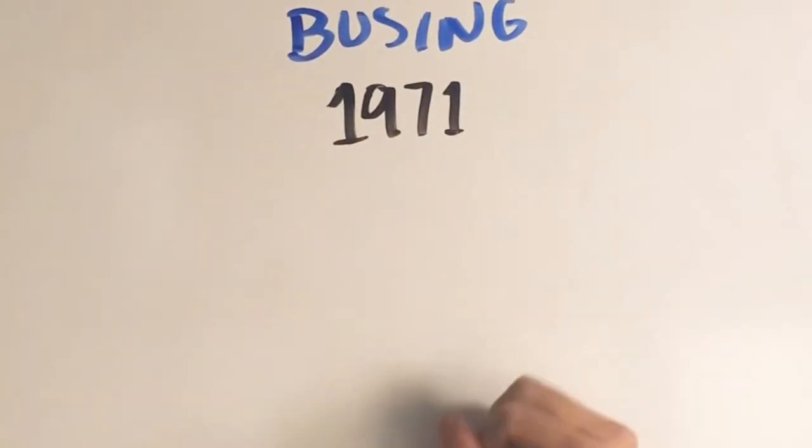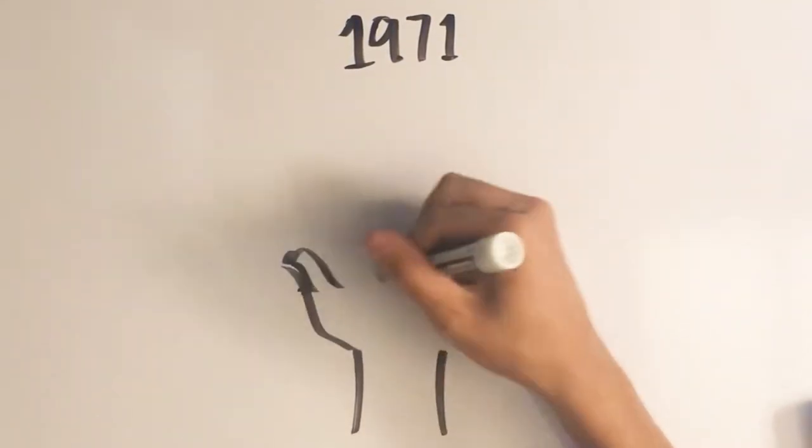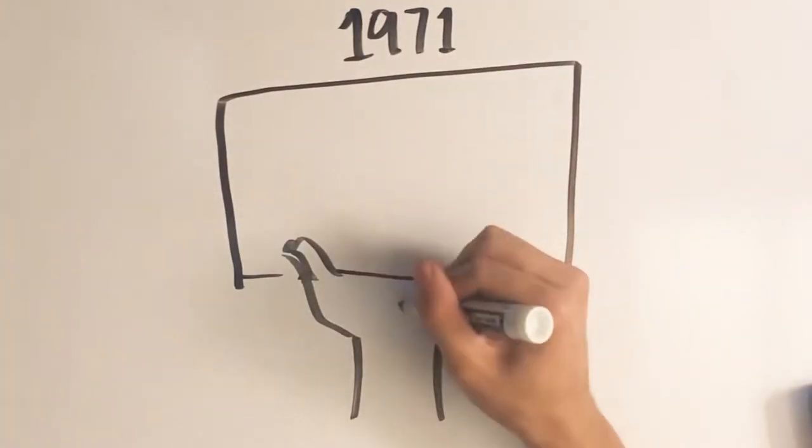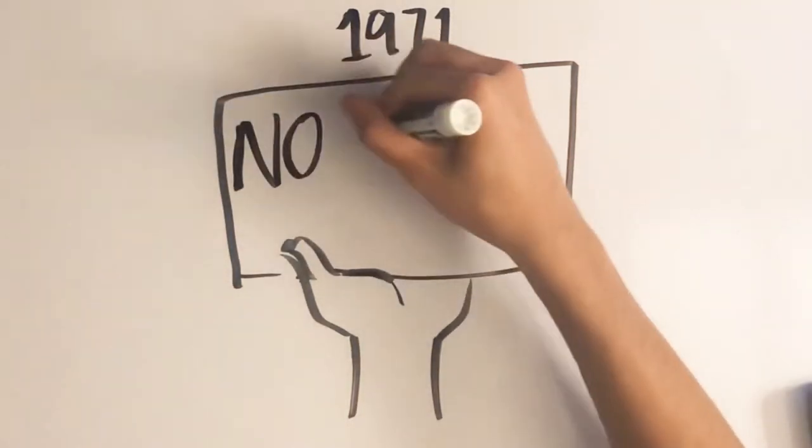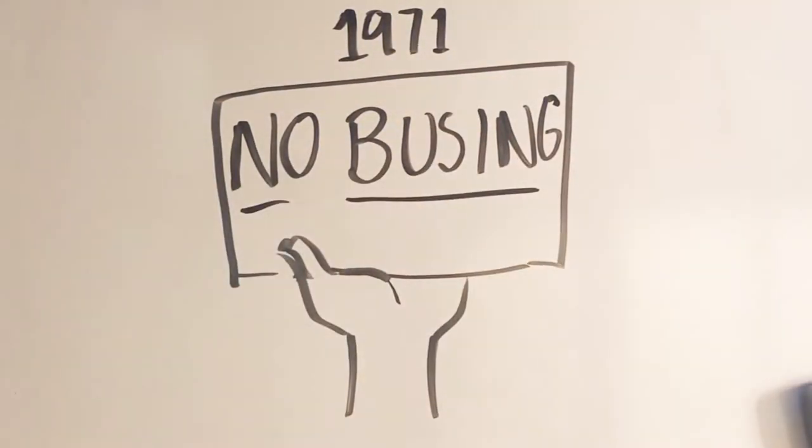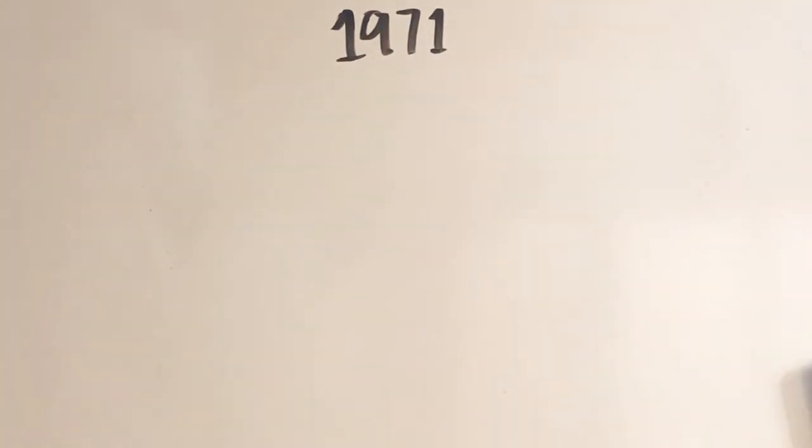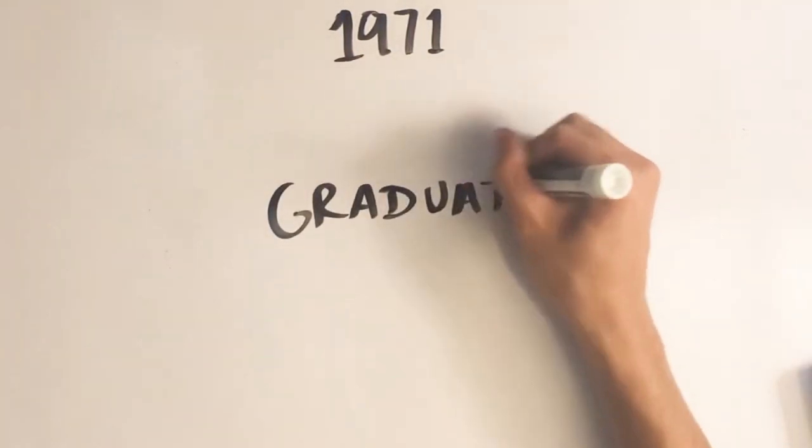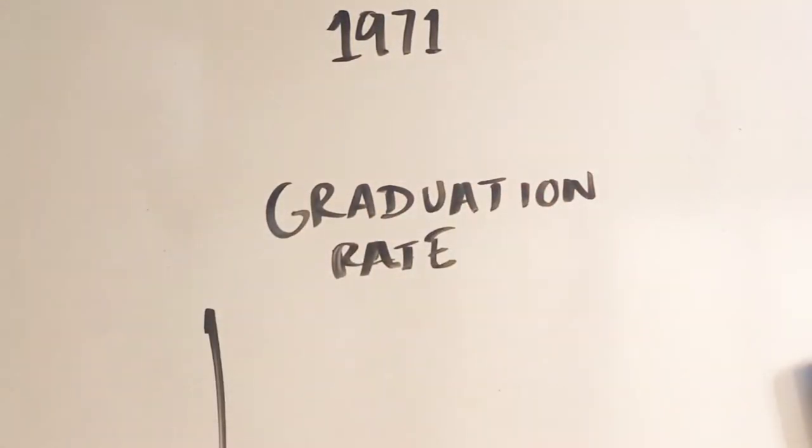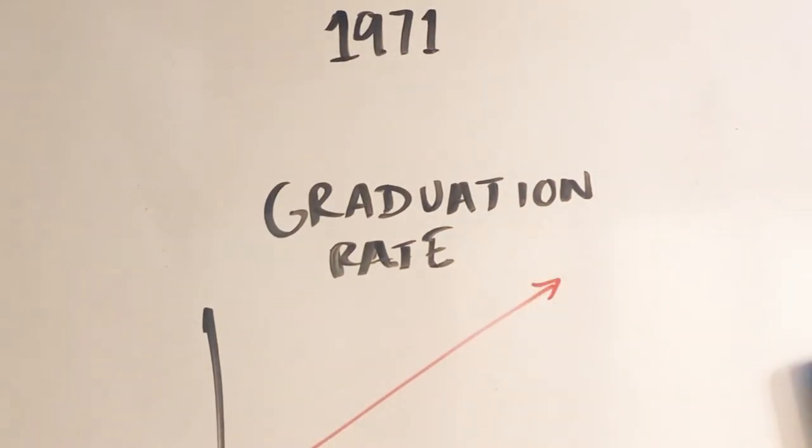Federal courts ordered urban schools to start busing students for a better racial balance. Children rode the bus for a long time each day and inevitably many white parents were upset because they didn't want their children going to schools in poor neighborhoods. However, African Americans benefited greatly. Graduation rate within their community rose. They were receiving better education and more went to college and got decent jobs.